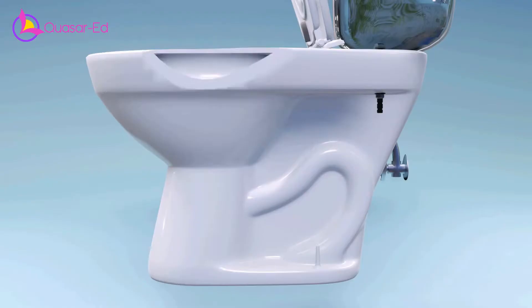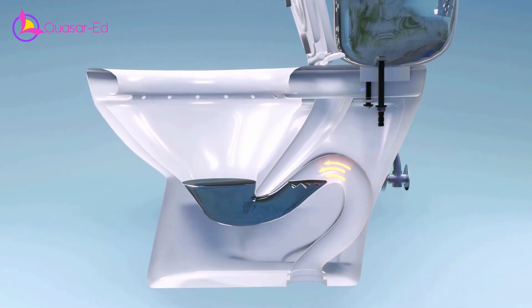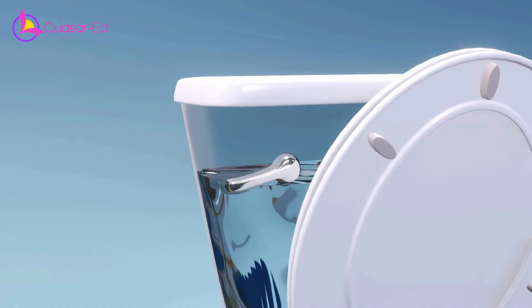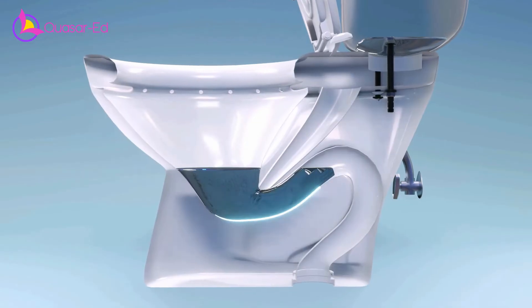Because of that water that left inside the bowl, the smell from the sewer won't reach the toilet. The reason why the little bit of water can stay in the bowl even though all the water get drained when we flush, is because of the unique S-shape path of the bowl.